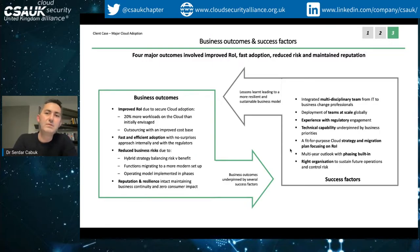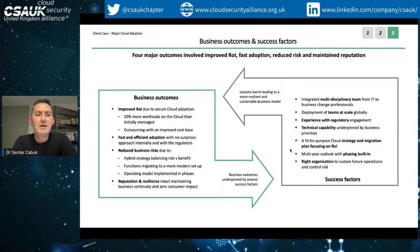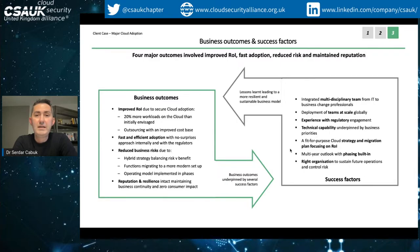One of the things we succeeded with was having that positive view - if you can do these things securely, you can potentially put more things on the cloud, and we can convince your risk and compliance function, who can convince the regulator. If you establish that chain, you can show your CIO that you got maybe 20% more workloads on the cloud than initially envisaged. The initial migration plan had 20% fewer workloads on the cloud - after demonstrating secure delivery, that was a better return on investment.